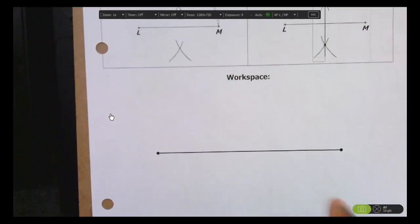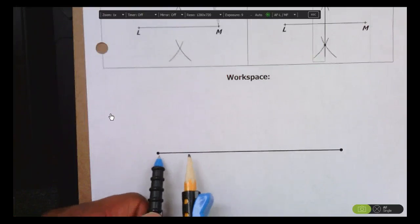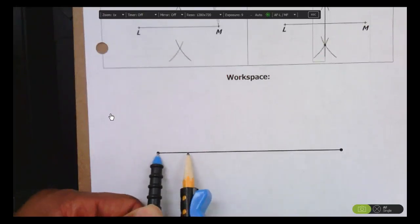This will show up again and again in all of the other constructions I'm going to show you. Now it's pretty simple. The first thing you do to construct a perpendicular bisector is put the point of your compass on one endpoint of the segment.